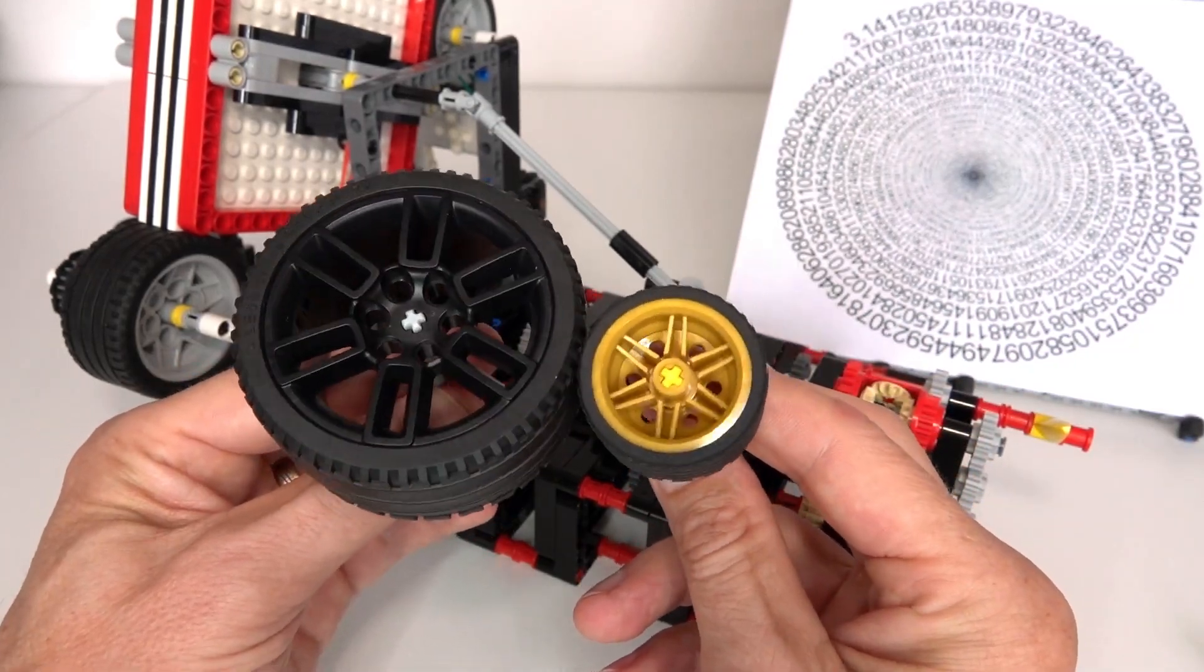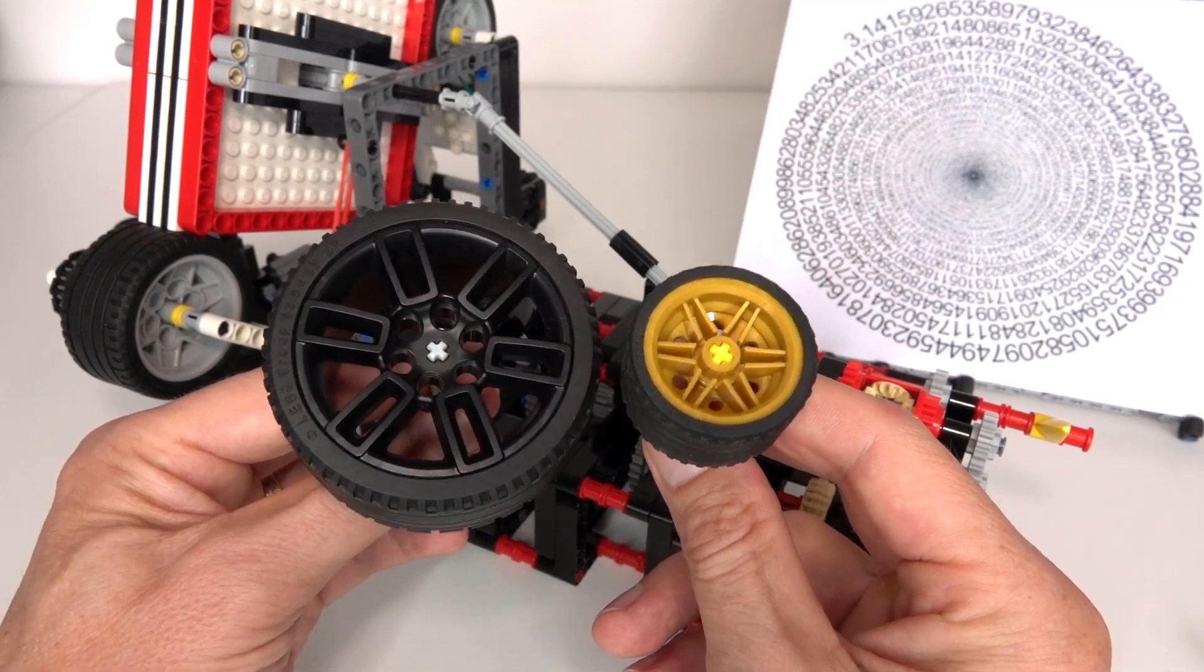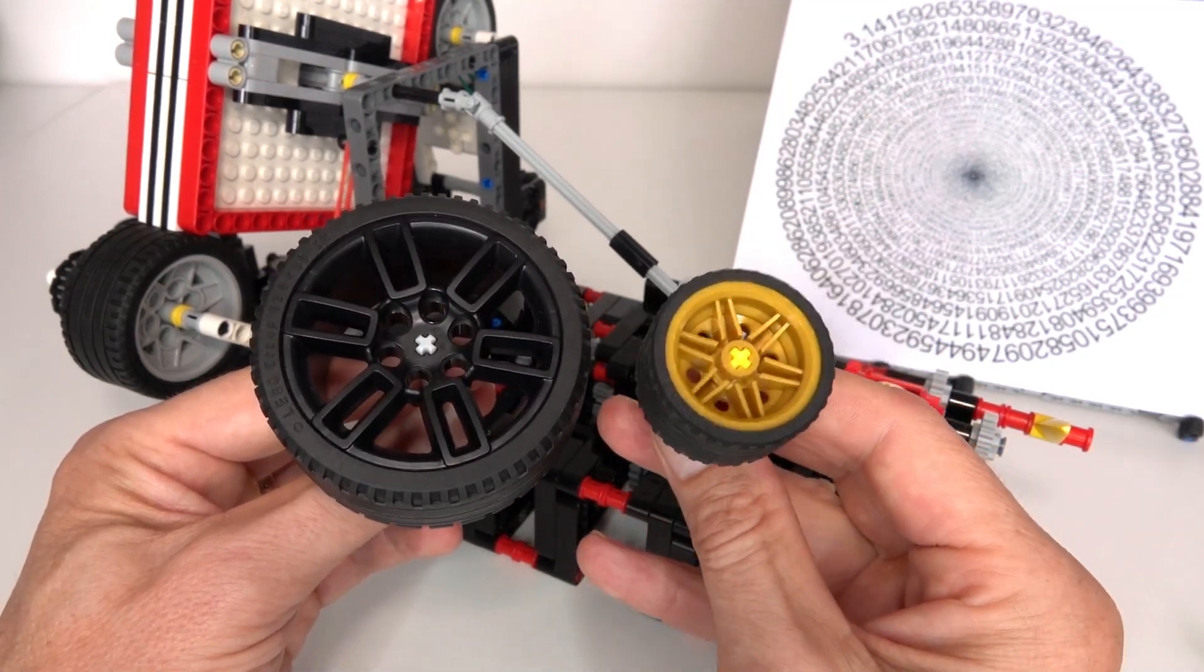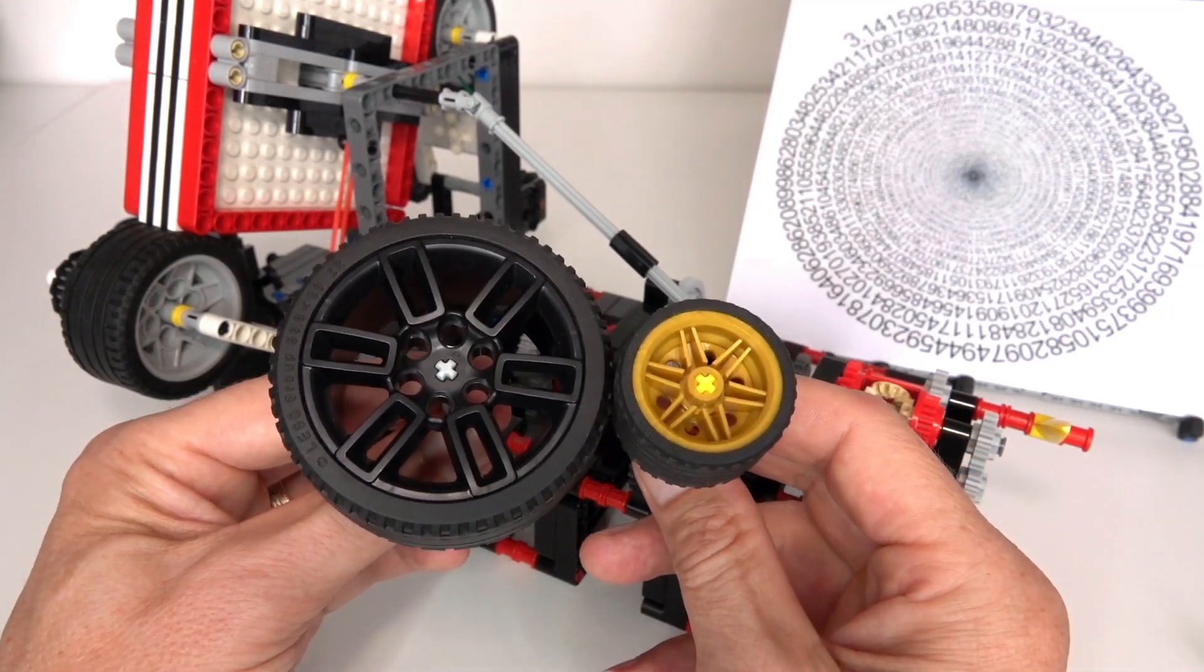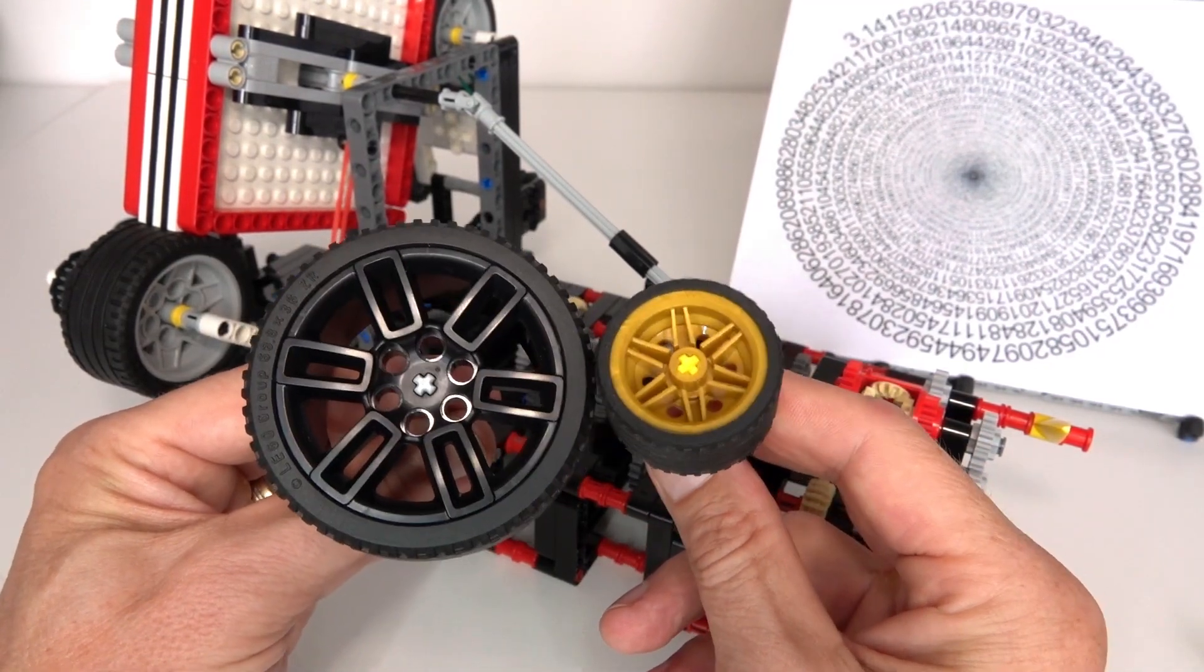What I really need is one wheel with the radius of pi and another one with a regular radius. Of course, in Lego there's none of those, so that is a big issue.